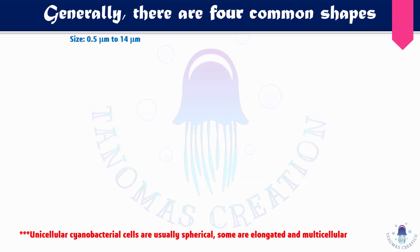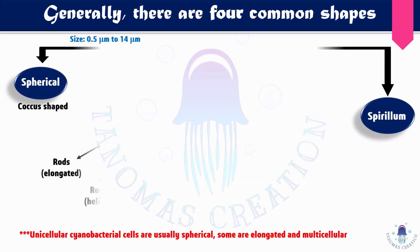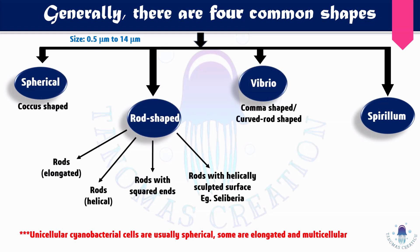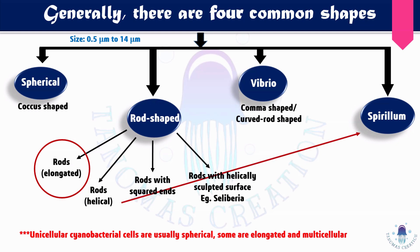In bacteria, there are four common shapes: spherical (coccus), rod (bacillus), vibrio (comma-shaped or curved rod), and spirillum (filamentous). The rod shape is further divided into four categories: elongated rods, helical rods, rods with square ends, and rods with helically sculpted surfaces. The elongated rod shape is the most common shape present in bacteria.